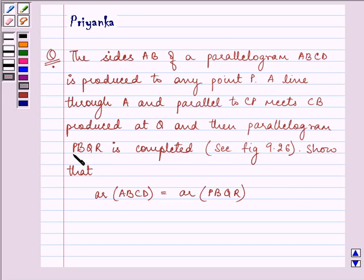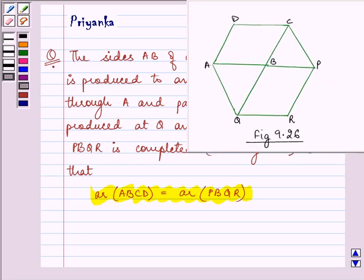And then parallelogram PBQR is completed. See figure 9.26, show that area of ABCD is equal to area of PBQR. Now this is the figure which we need to refer. We need to prove that area of ABCD is equal to the area of parallelogram PBQR.